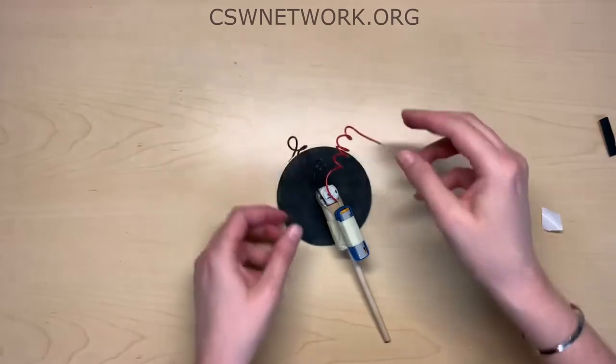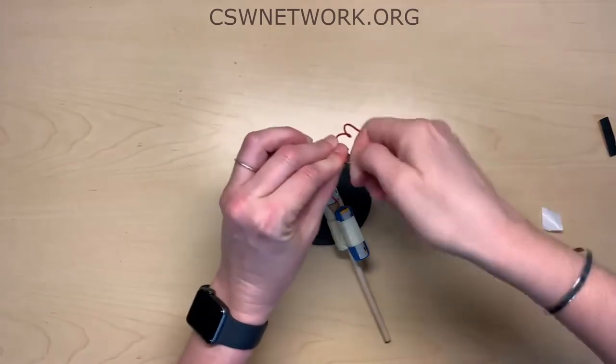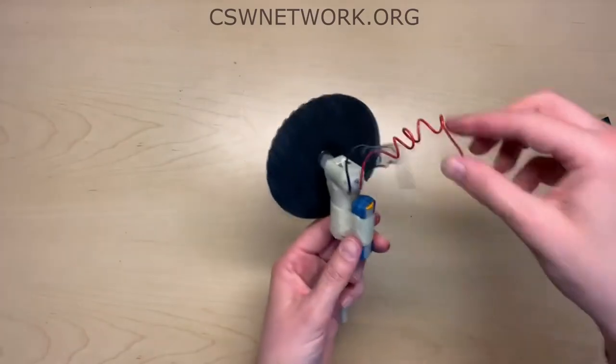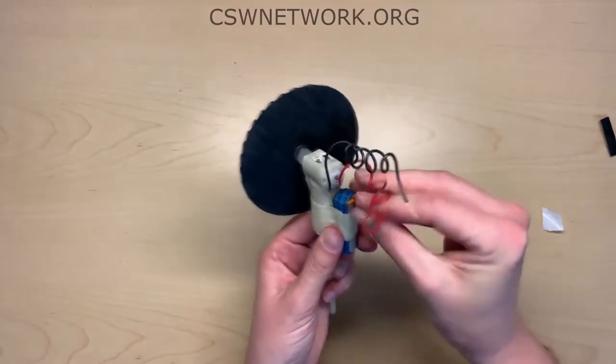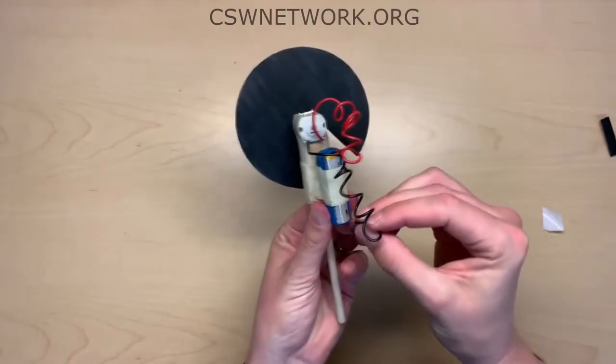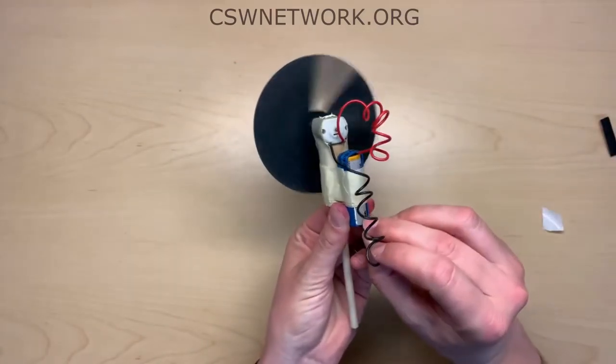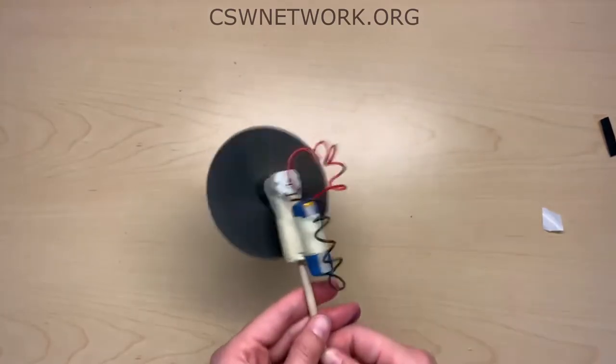Connect your motor and battery by inserting one wire between the battery terminal and the blue rubber band. Repeat on the other terminal with the other wire. Conecta tu motor y batería insertando uno de los alambres entre el terminal de la batería y la liga. Repite este proceso con el otro terminal.